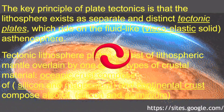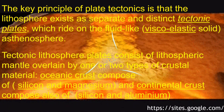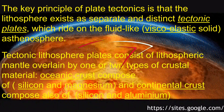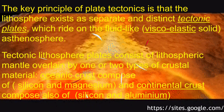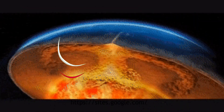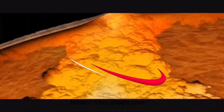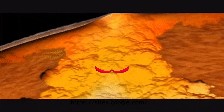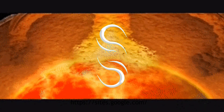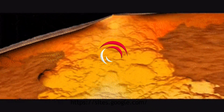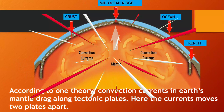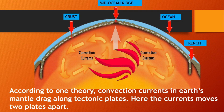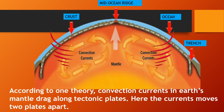Geological Facts About the Convection Current in the Earth's Mantle. The key principle of plate tectonics is that the lithosphere exists as separate and distinct tectonic plates, which reside on the fluid-like asthenosphere. Tectonic lithosphere plates consist of Oceanic Crust and Continental Crust. Ang Oceanic Crust ay ang mga lupa sa ilalim ng tubig, binubuo ng silicon at magnesium. Ang mga Continental Crust ay sa ibabaw ng lupa na binubuo din ng silicon at aluminum. Ang lokasyon kung saan nagtatagpo ang dalawang plato ay tinatawag na plate boundary.